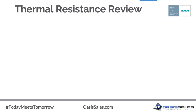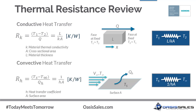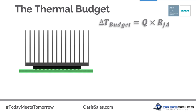When determining thermal requirements of a heat sink, it's useful to think in terms of thermal resistances, typically shown as temperature difference per unit power. For conduction, this translates to L/kA — the ratio of material thickness to thermal conductivity times cross-sectional area. For convection, thermal resistance is 1/hA — the inverse of the heat transfer coefficient times surface area. We can use the idea of thermal resistances to develop a thermal budget, a common approach for estimating heat sink requirements.